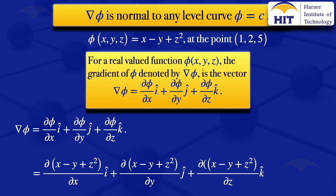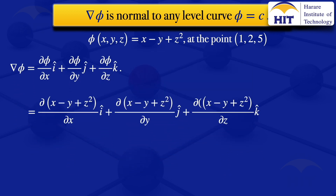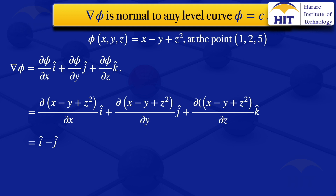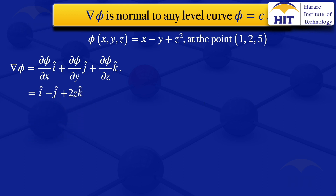Now I evaluate the partial derivatives. For the first one, differentiating with respect to x while treating y and z as constants, we get 1, so we have 1i. For the second, differentiating with respect to y while treating x and z as constants, the derivative of minus y gives minus 1, so we have minus j. For the third, treating x and y as constants and differentiating with respect to z, we get 2z, giving 2zk. So grad phi equals i minus j plus 2zk.